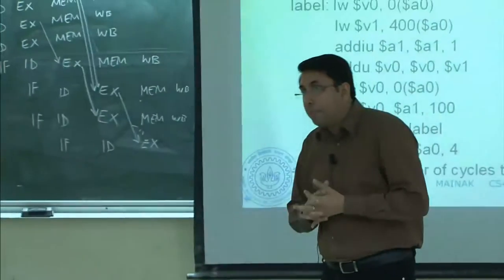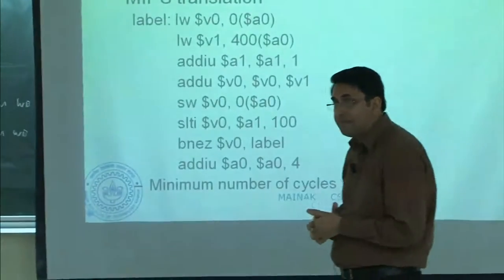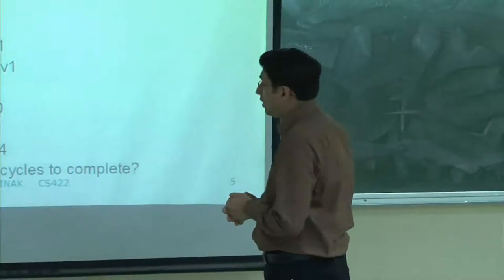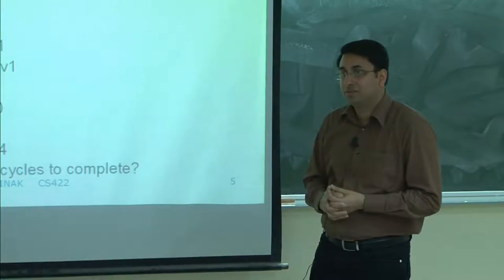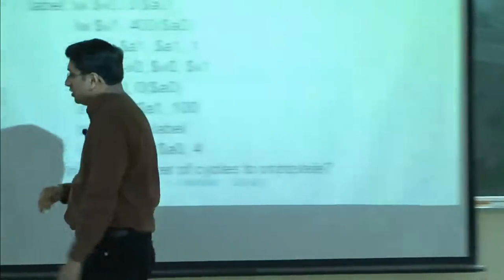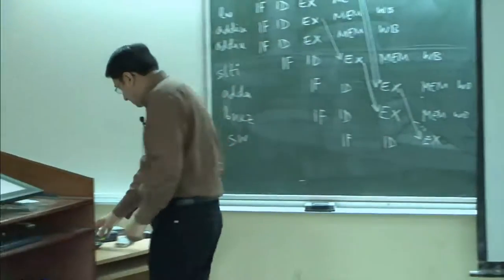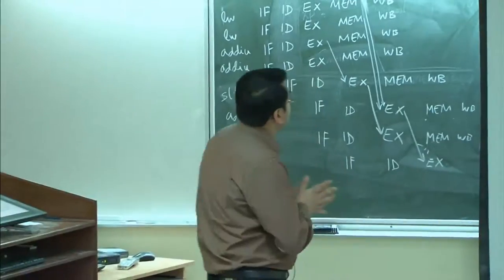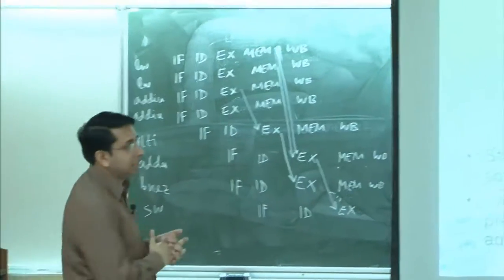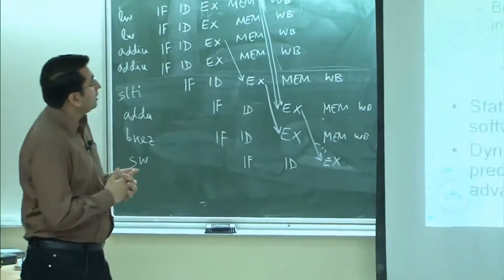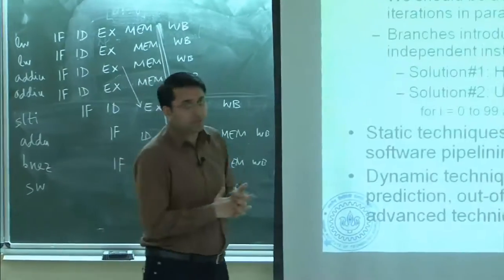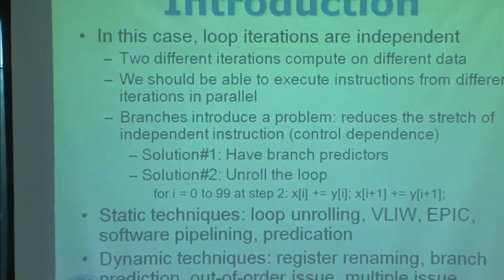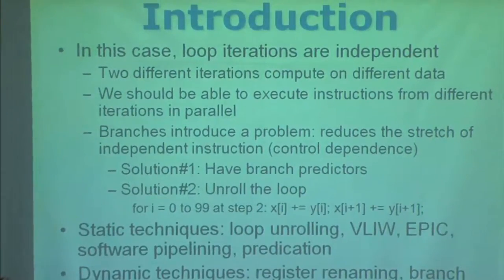We can run different loop iterations. And why can you do that? Because loop iterations are independent in this case — two different iterations compute on different data. So we should be able to execute instructions from different iterations in parallel. The only question is how to really systematically do that.